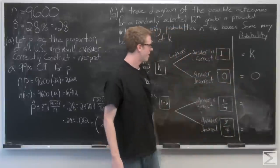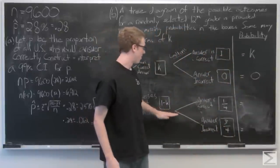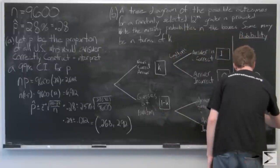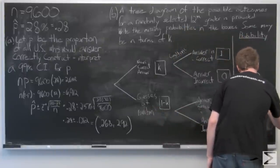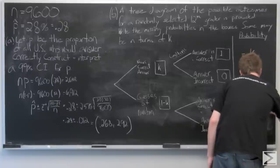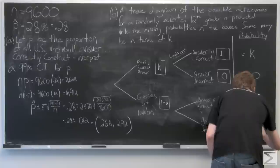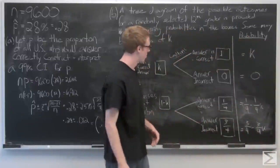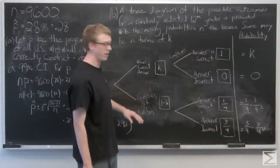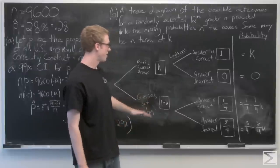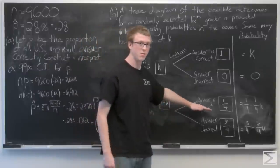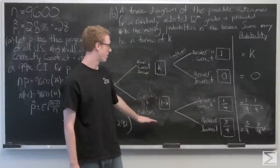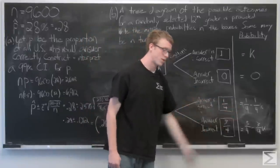To find the joint probabilities on the right side of the tree diagram, we multiply: 1 minus K times 1/4, and 1 minus K times 3/4. So the probability of guessing at random and being correct is (1/4)(1 minus K), which equals 1/4 minus (1/4)K, and the probability of guessing at random and being incorrect is 3/4 minus (3/4)K. We've finished filling in the tree diagram.